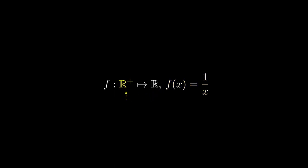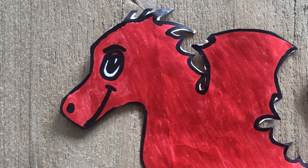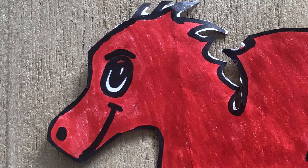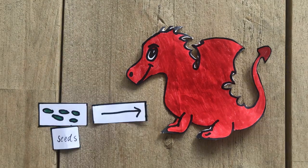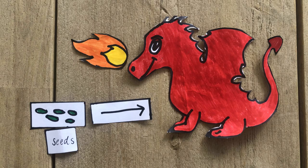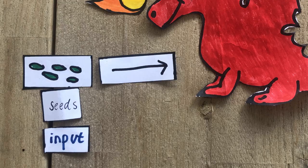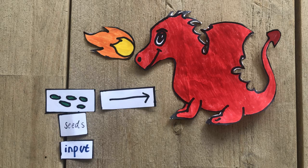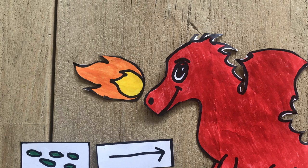If you're into coding, then this notation should seem familiar — you can think of the variable x as a parameter that needs to be filled in for your function. Now let me introduce you to another function: the dragon. This is a dragon you don't want to mess with. If you give it seeds, it produces red fire. This can also be thought of as a function, with the seeds as the input, the dragon as the function, and the red fire as the output.